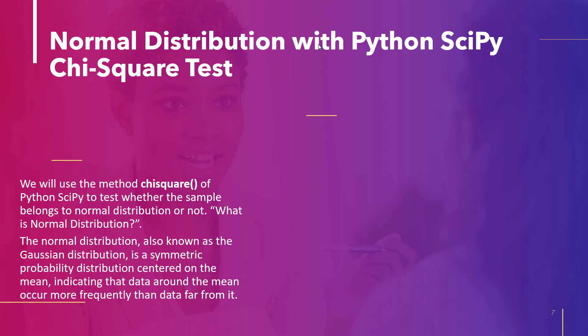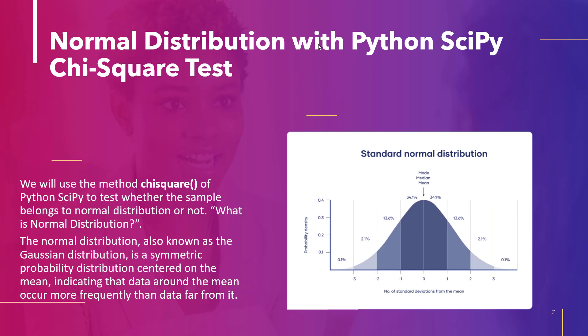The next topic is normal distribution with Python SciPy chi2 test. To determine whether a sample conforms to a normal distribution, we apply the Python SciPy chi2 method. The normal distribution is a symmetrical continuous probability distribution around its mean, with most observations clustering around the central peak and probabilities for values further from the mean tapering off equally in both directions. Extreme values at both ends are also unlikely.